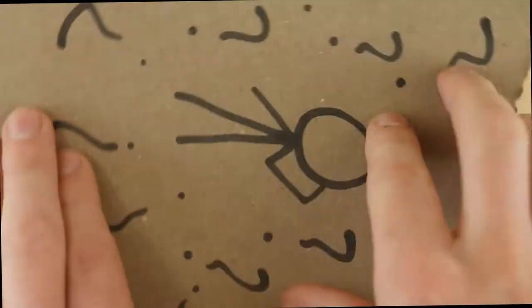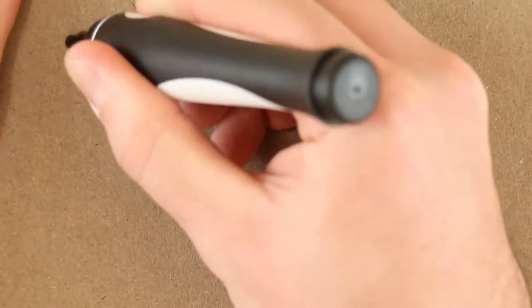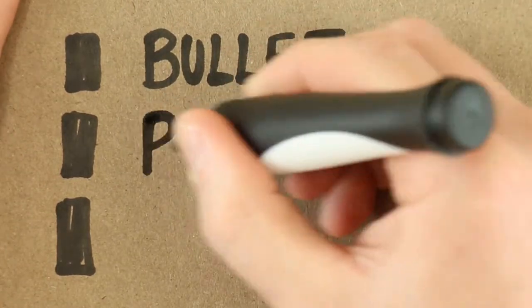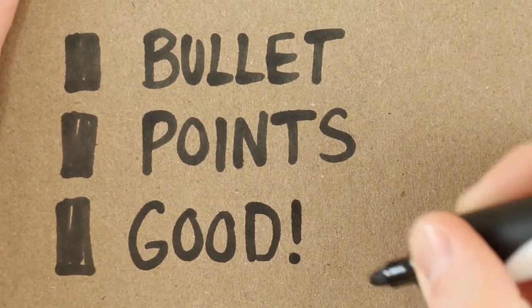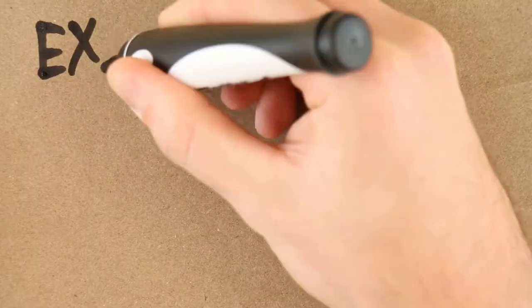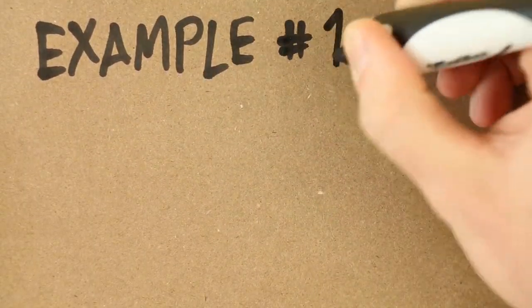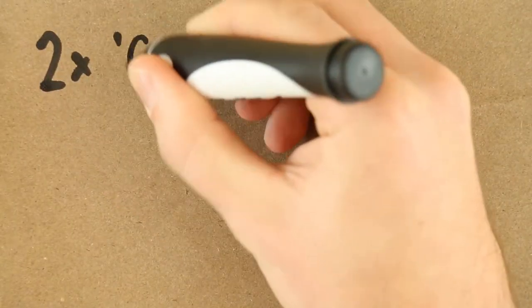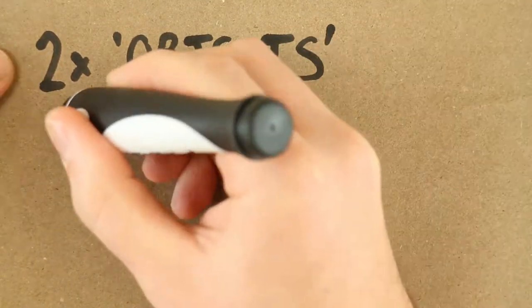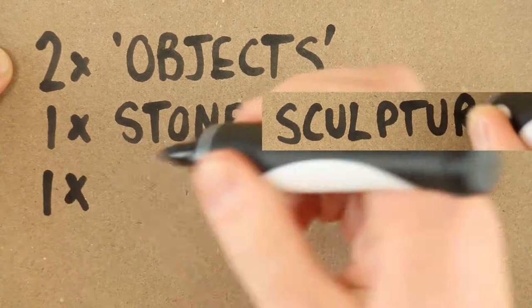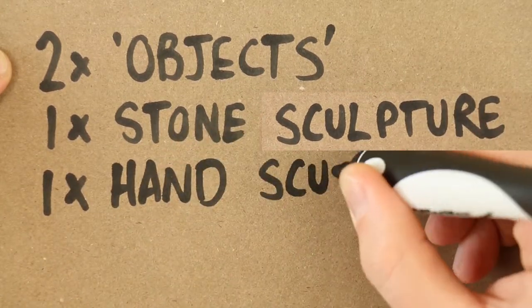Still feeling slightly confused and lost? Here's a good tip on how to proceed from this point. Simply use bullet points and make your own lists on what exactly the brief is asking for. You can see with example one, these are the requirements the brief was asking for for this particular assignment: two objects — one stone sculpture, one hand sculpture. Simple as that.